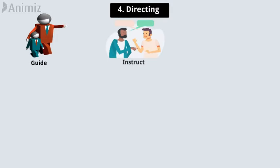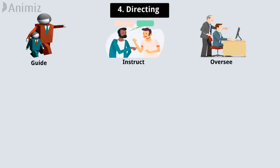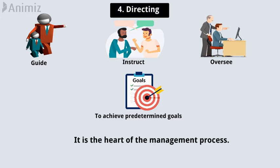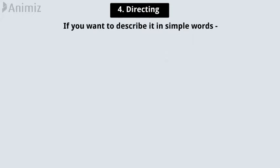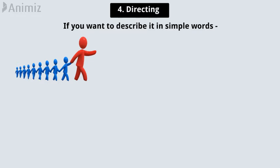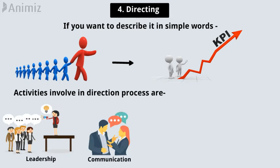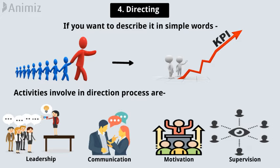Number 4 is Directing. Directing is a process in which managers guide, instruct, and oversee the performance of the employees to achieve predetermined goals. It is the heart of the management process. In simple words, it is actually providing guidance to the workers to perform to the best of their abilities and capacities. Activities involved in the direction process are leadership, communication, motivation, and supervision.